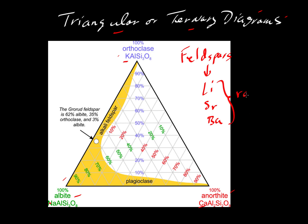These additional components tend to be relatively rare or low in abundance. So when we talk about a feldspar's composition, most of it — 99 percent, very close to a hundred percent — is going to be the sum of three components: orthoclase, albite, and anorthite. If we take all of the feldspar's components but ignore all but these three and let them sum to a hundred percent, then we can plot them in a ternary diagram.